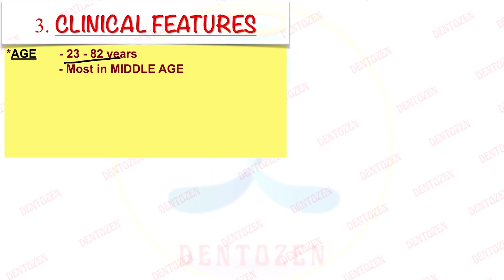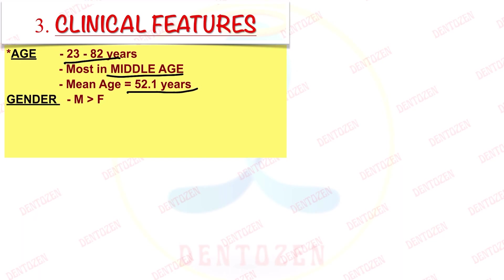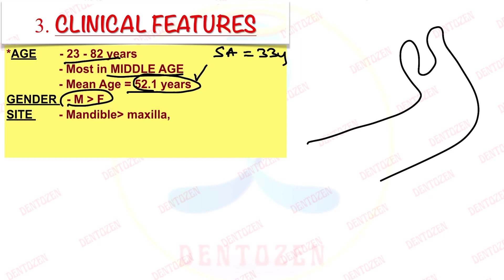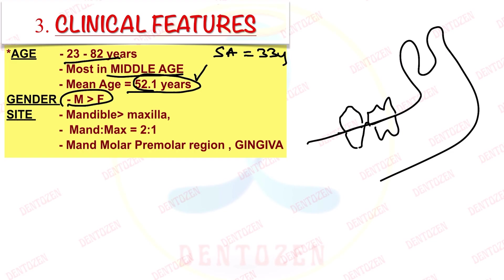Now we come to the clinical features. This tumor occurs over a wide age range, 23 to 82 years, mostly seen in middle age. The mean or average age is 52.1 years. For solid ameloblastomas, mean age is 33 years, so peripheral ameloblastomas occur in a slightly older population. Males are affected slightly more than females. Regarding site, the mandible is affected more than the maxilla, particularly the mandibular premolar and molar region.